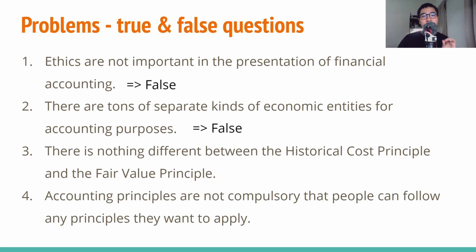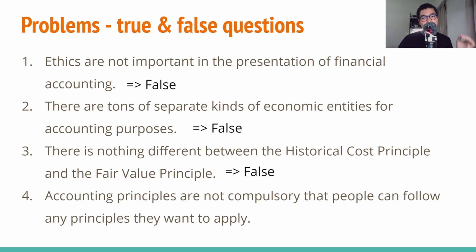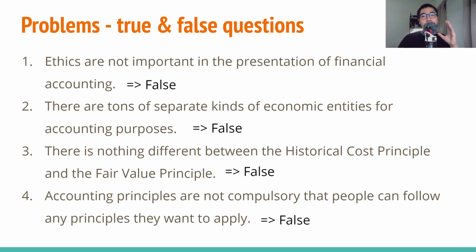Third: 'There is no difference between the historical cost principle and the fair value principle' — true or false? The answer is false. In the historical cost principle, we record the company's assets on the financial statement at their cost at the time of purchase, as well as over the time the asset is held. In the fair value principle, we record the company's assets and debts at fair value. Fourth: 'Accounting principles are not compulsory and people can follow any principles they want' — true or false? The answer is false, because accounting principles and assumptions are guidelines that accountants must obey in presenting financial statements.